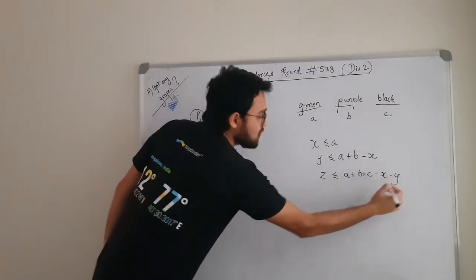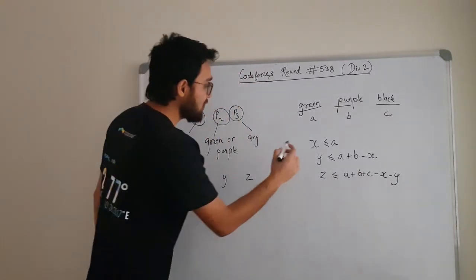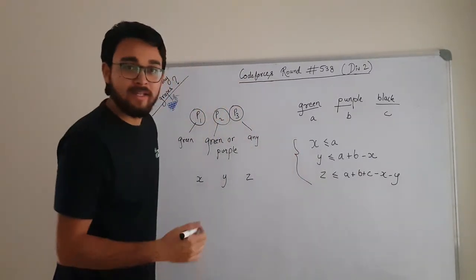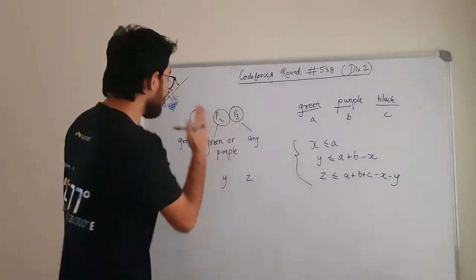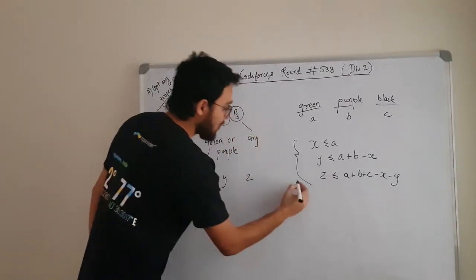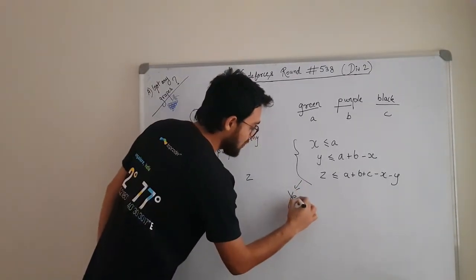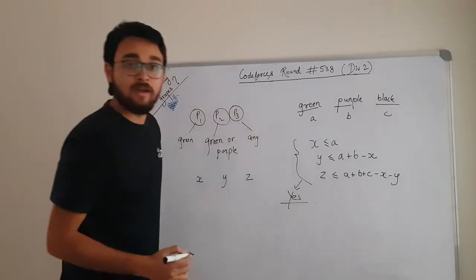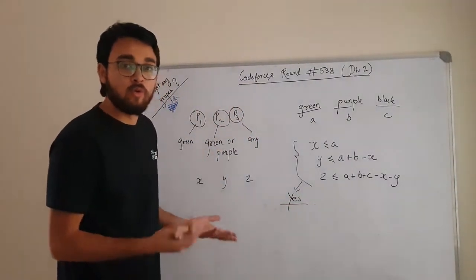Minus X minus Y. Now if all these three equations are satisfied, that means we can satisfy the needs of P1, P2, and P3. So our answer will be yes, we can satisfy. Otherwise we can't satisfy and the answer will be no.